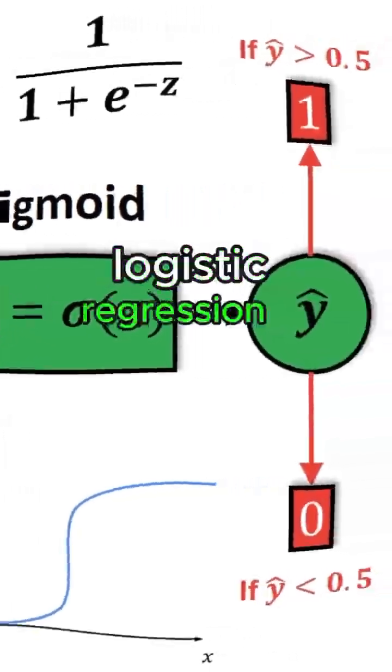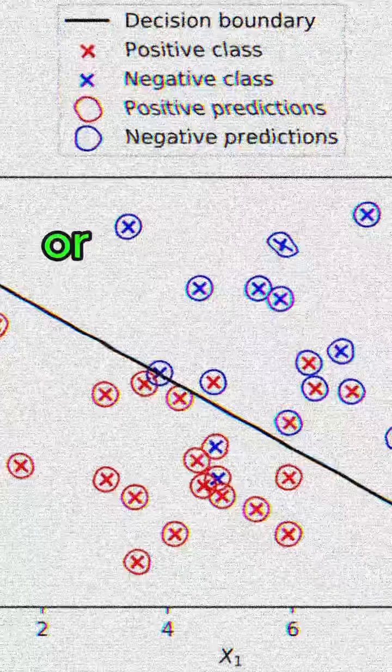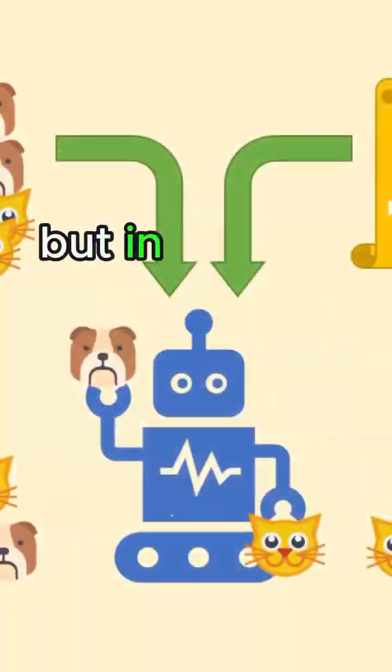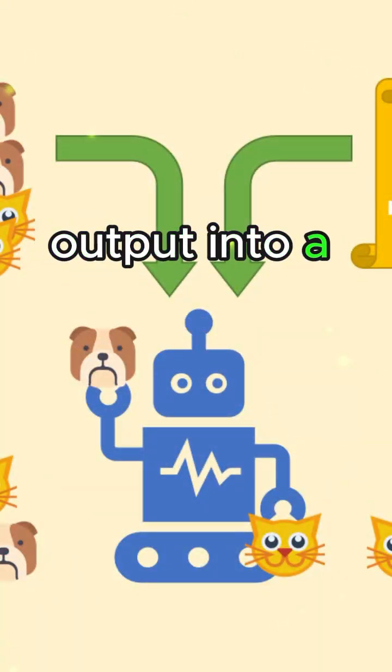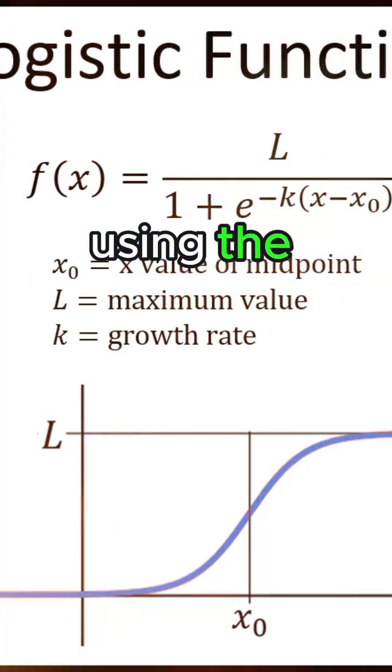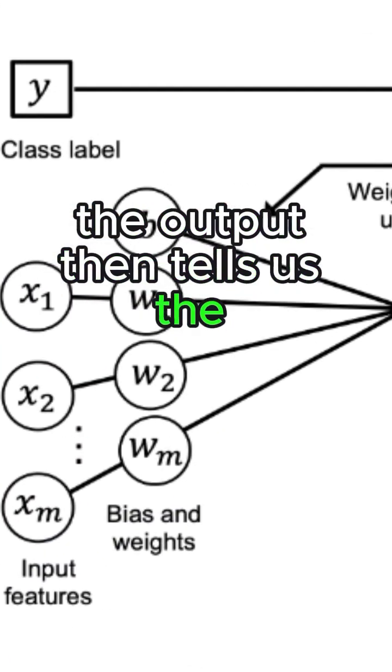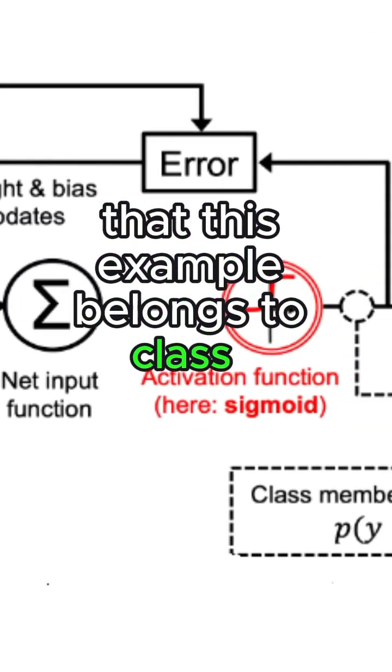How does it work? Logistic regression is very similar to linear regression, where the model is a straight line or hyperplane in multiple dimensions. But in order to convert the model output into a binary prediction, we squash it down into the range 0 to 1 using the logistic function, also known as the sigmoid. The output then tells us the probability that this example belongs to class 1.